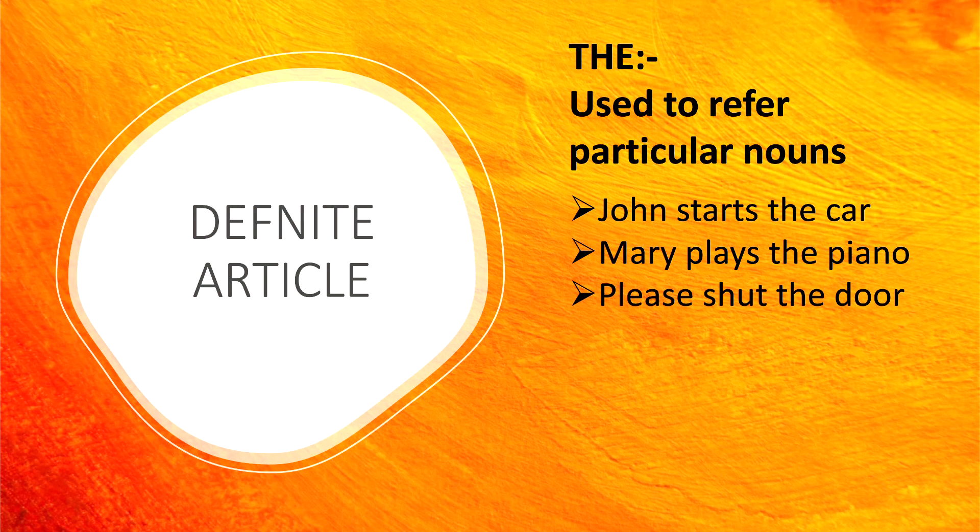Coming to the next: 'the' is a definite article. 'The' is used to refer to a particular noun. For example, John starts the car. Car is a thing, so that is a particular noun. If you are stating a particular noun like the car, you should use 'the car'. Another example is Mary plays the piano. Another one is please shut the door.